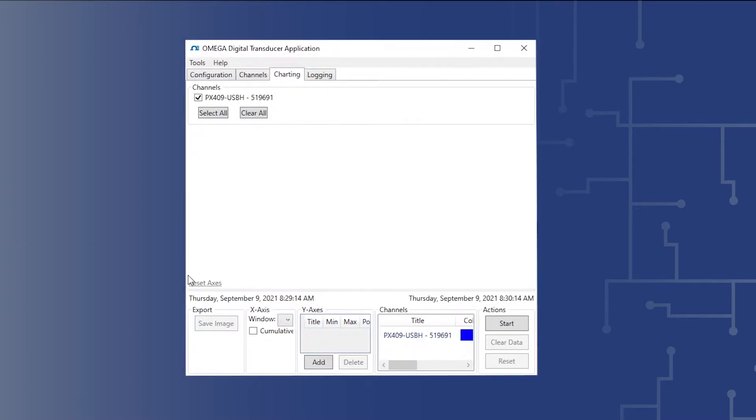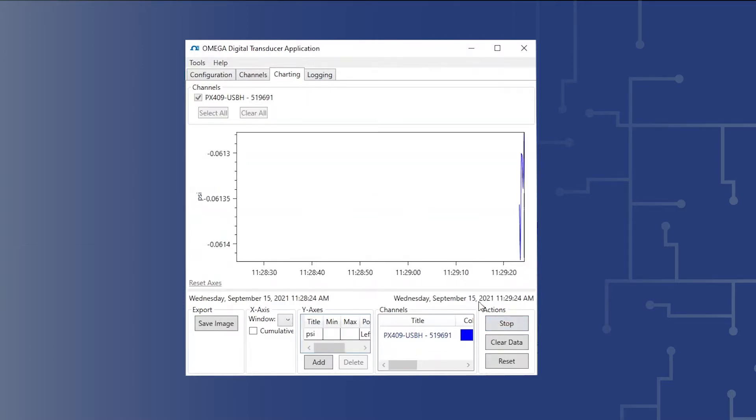5. In the lower left area of the charting window, set the X-axis window time to 1 minute. 6. In the lower right side of the charting window, select the Start function to begin charting the pressure in the NanoJet print system.